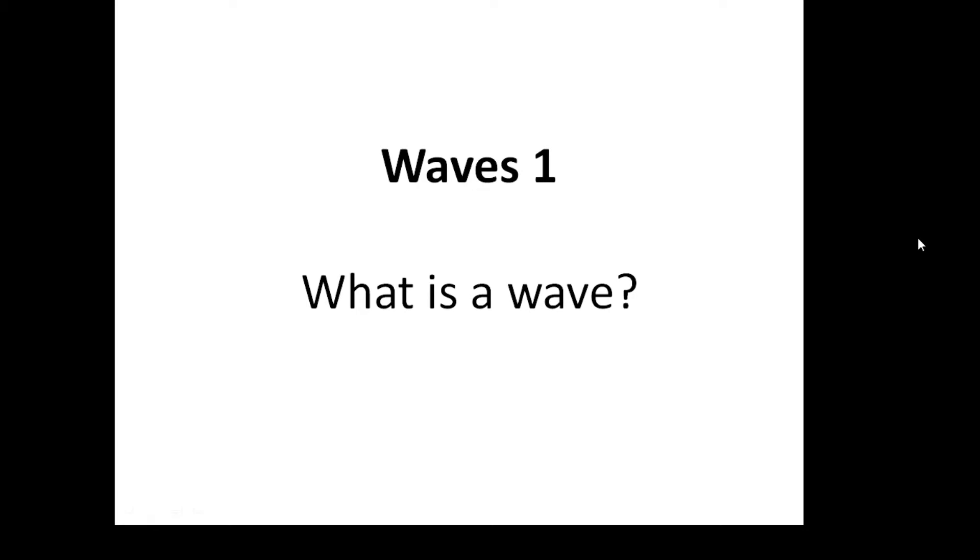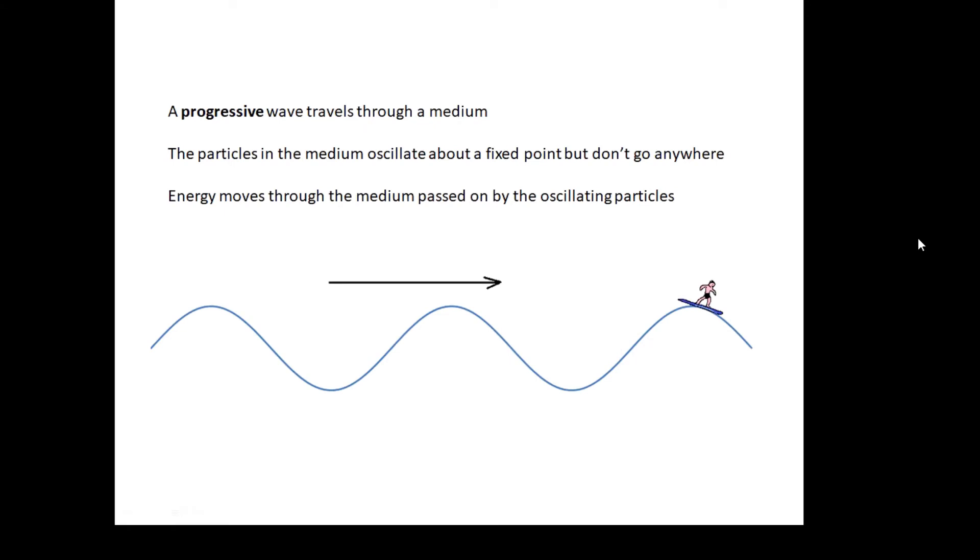What is a wave? A progressive wave—we'll talk about stationary waves later—travels through a medium. The particles in the medium oscillate about a fixed point but don't go anywhere. Energy moves through the medium, passed on by the oscillating particles. Here's a water wave traveling from left to right.